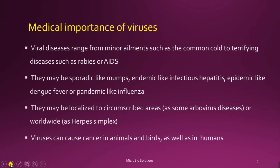Viruses may be localized to circumscribed areas, as in some arboviral infections, or can cause a circumscribed infection as in herpes simplex virus. Viruses can also cause cancer in animals, birds, and humans. The only human carcinoma which is vaccine-preventable is hepatocellular carcinoma, caused by hepatitis virus.